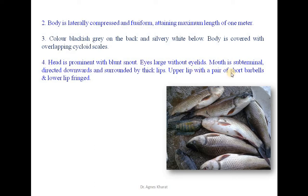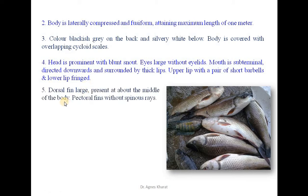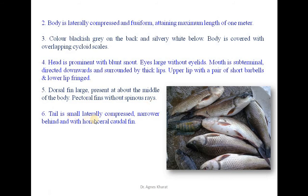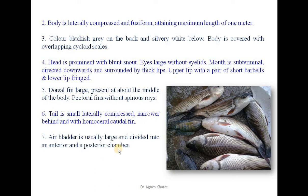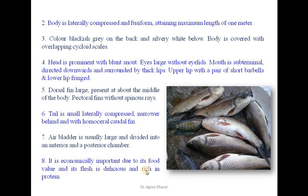Eyes are without eyelids. The mouth is sub-terminal, directed downward, and surrounded by thick lips. The upper lip has a pair of short barbels and the lower lips are fringed. The dorsal fin is large, present at about the middle of the body, and pectoral fins without spinous rays are present. The tail is small, laterally compressed, narrower behind, with a homocercal caudal fin. The air bladder is large and divided into anterior and posterior chambers. It is economically important due to its delicious flesh, which is rich in protein content.